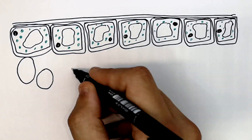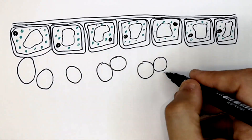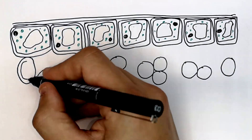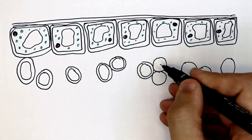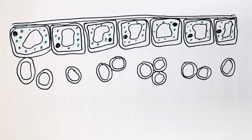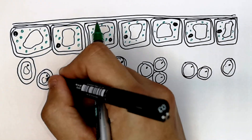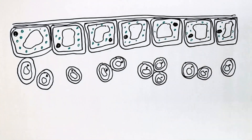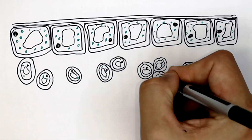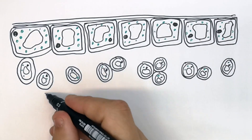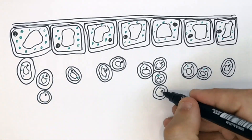This is the mesophyll layer of the leaf. The mesophyll layer is below the palisade cells. They have got fewer chloroplasts than the palisade cells, so less photosynthesis occurs here.